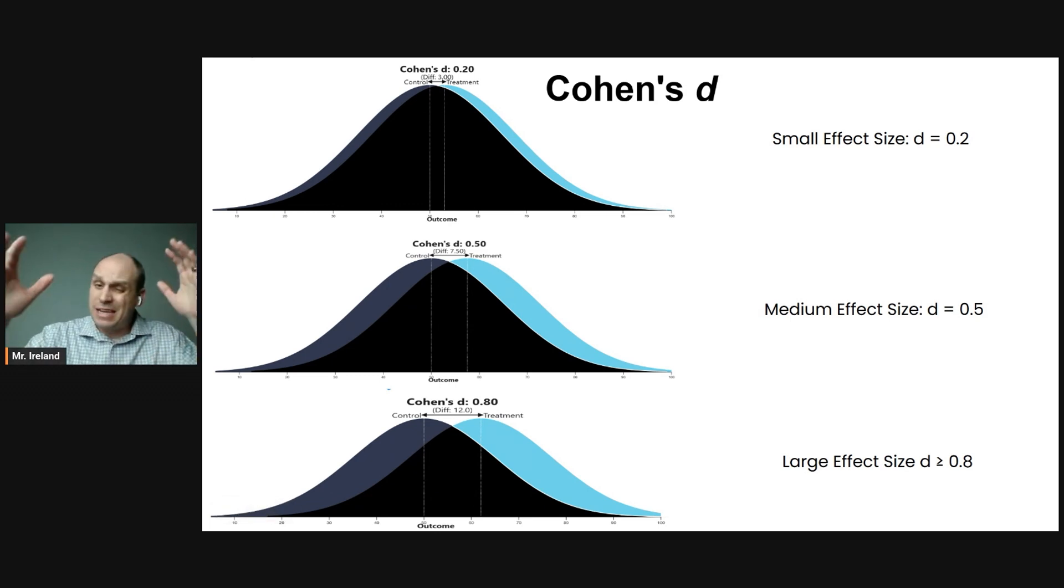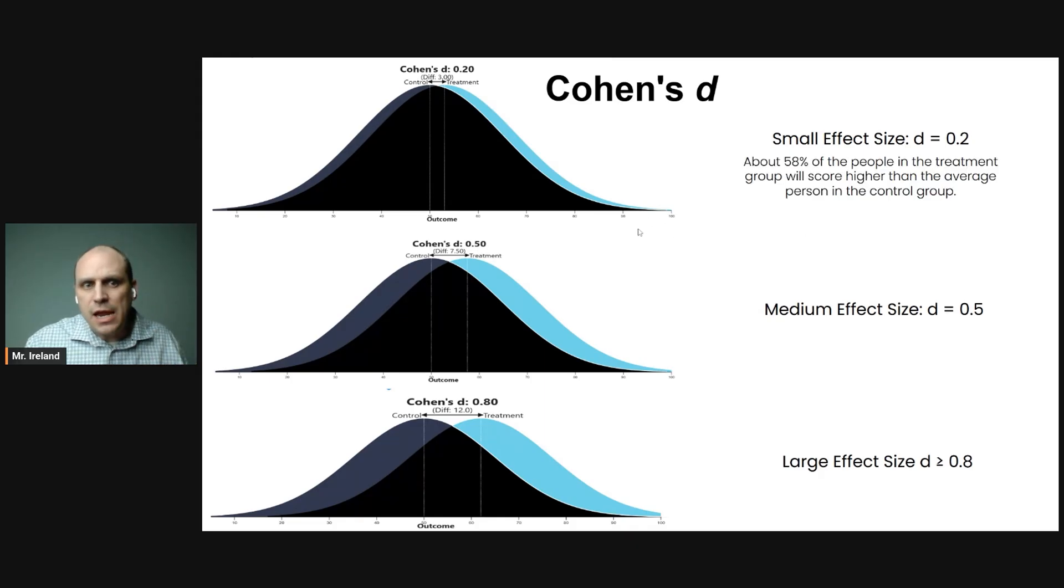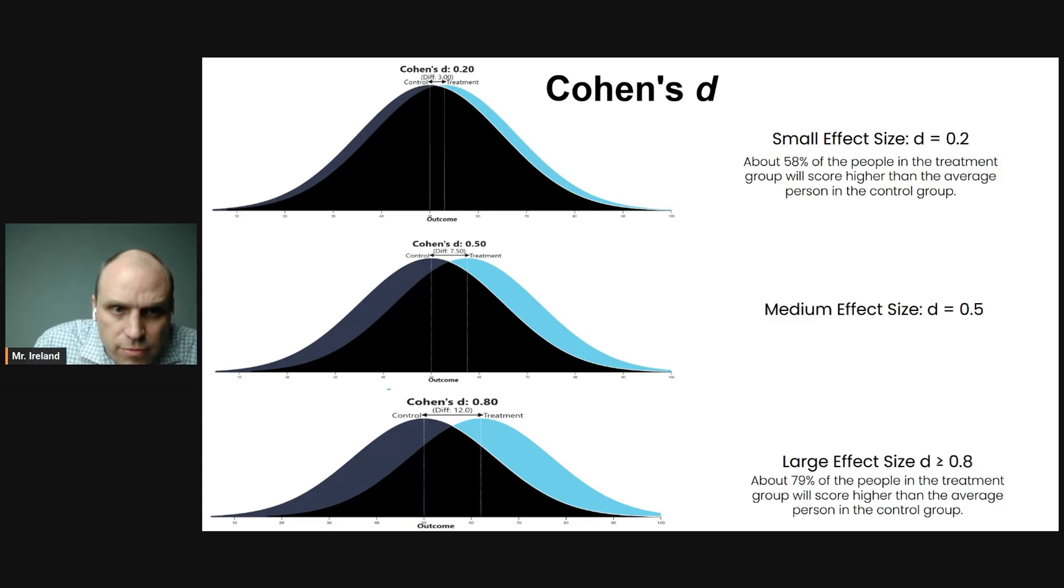Taking this a step further, we don't know how much College Board is going to ask you about this stuff. Here's the technical explanation. With a small effect size where D equals 0.2, about 58% of the people who take the drug in the treatment group will score higher than the average person who didn't take it. Compare that to a large effect size, about 79% of the people who take the drug in the treatment group will score higher than the average person who didn't take it.